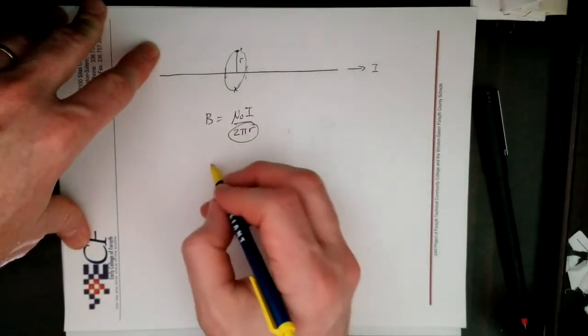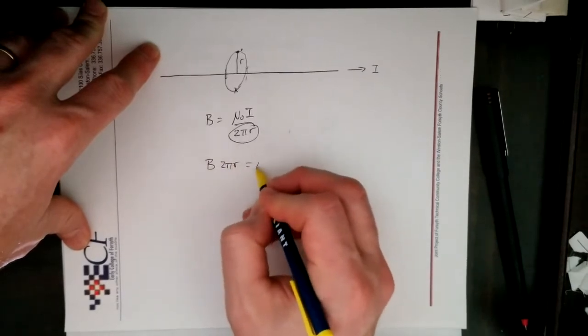That right there is a circumference, so I'm just going to do b times 2 pi r is equal to mu naught i.